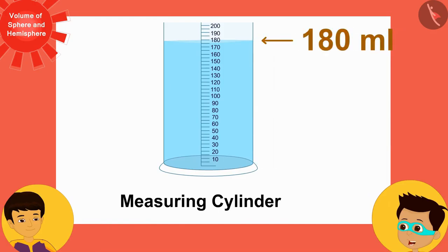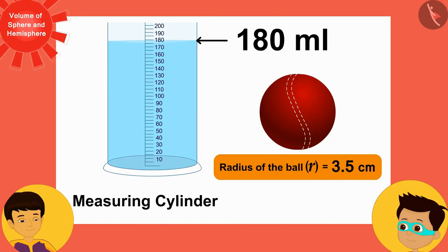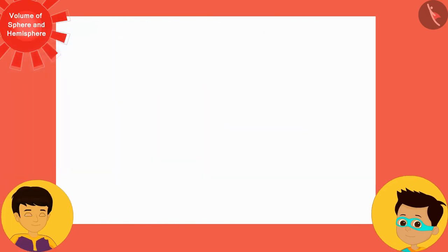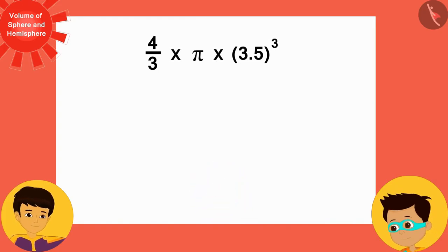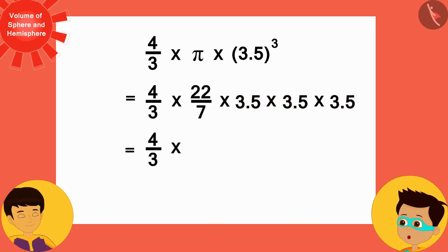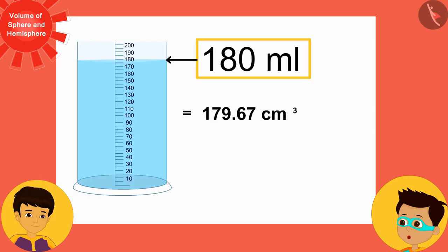It's about 180 milliliters. Alright, now look, Thomas, the radius of the ball is 3.5 centimeters. Can you find the value of 4 by 3 product of pi and the cube of the radius of the ball? Absolutely. See, how I solve it quickly. This is equal to 179.67. That is, approximately 180 milliliters.